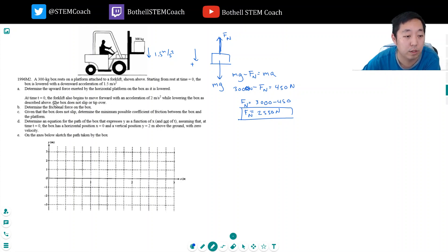At time t equals 0, the forklift also begins to move forward with an acceleration of 2 meters per second squared while lowering the box as described above. The box does not slip or tip over. Determine the frictional force on the box.